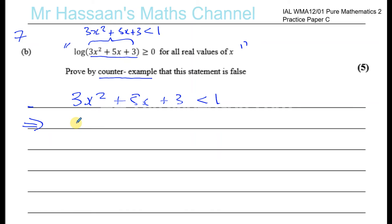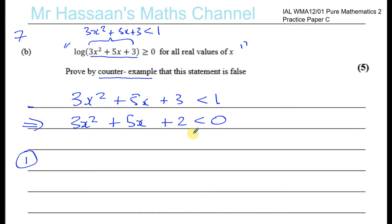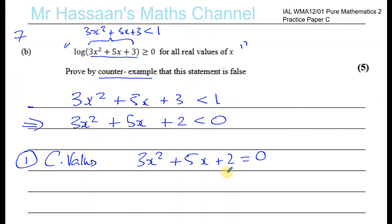This inequality is the same as 3x² + 5x + 2 < 0. So let's solve this quadratic inequality by first finding the critical values — where does it equal 0. So we have 3x² + 5x + 2 = 0.